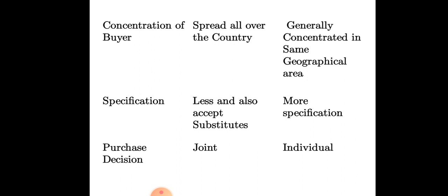The next point is purchase decision. In consumer behavior, the decision is a joint one — consumers are influenced by others. But in organizational behavior, it is an individual decision, where a single organization is going to buy that product.